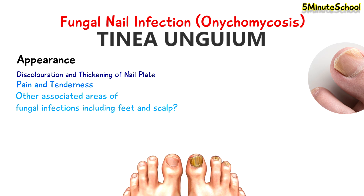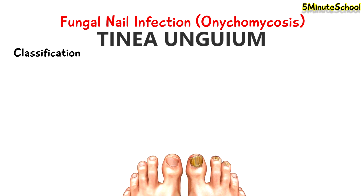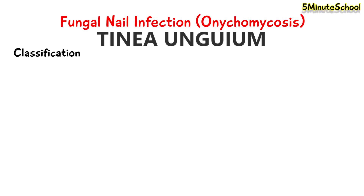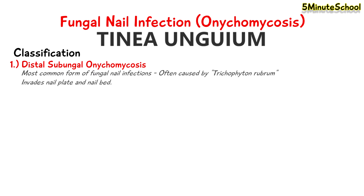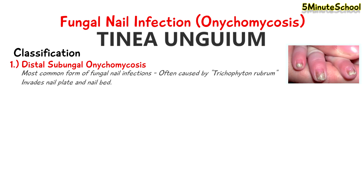We can classify fungal nail infections based on the type of infection or its appearance. One type is called distal subungual onychomycosis, and this is the most common form of fungal nail infections, often being caused by the fungi Trichophyton rubrum, and it invades the nail bed and under the nail plate.